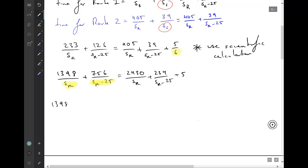So 1398 times SR minus 25 because the SRs would have cancelled, plus 756 SR equals 2430 times SR minus 25 plus 234 SR plus 5 times SR times SR minus 25. Now in this case, there's nothing to cancel.